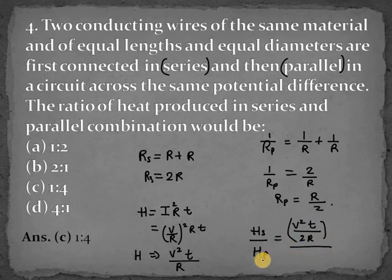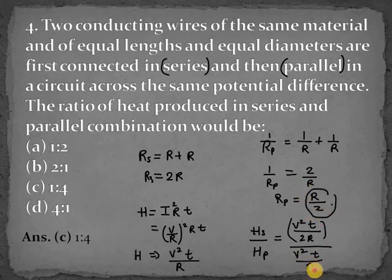Now for the parallel configuration, it will be V squared T over Rp. In parallel, Rp is R over 2.